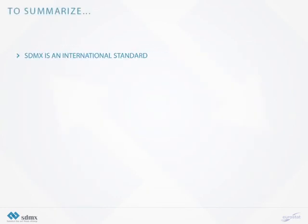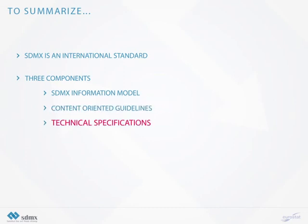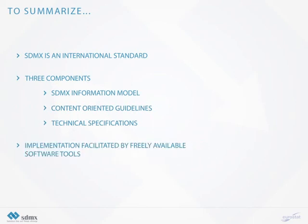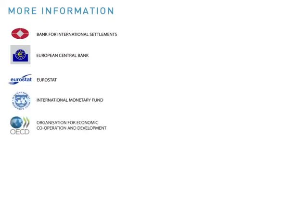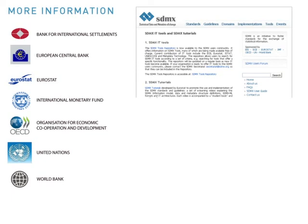To summarize, SDMX is an international standard. It has three components: the SDMX information model for data and metadata, content-oriented guidelines, and technical specifications for exchange. Its implementation is facilitated by freely available software tools. SDMX is sponsored by seven international organizations since 2001. If you want to know more about it, look at sdmx.org, which provides the technical standard and guidelines and links to other resources such as the Eurostat SDMX InfoSpace and self-learning tutorials on specific topics.